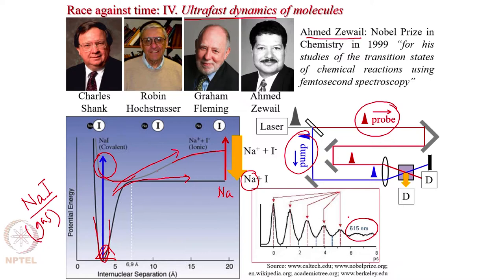Zewail and coworkers launched the pump pulse and after a controlled time delay launched the probe pulse. The time delay is controlled using an interferometric setup: you split the pump and probe beams, and in the probe arm you move a mirror with very precise steps, translating to a temporal delay on the order of a fraction of a femtosecond. This technique is known as the pump-probe technique - you pump the system and after a certain time delay you probe it, varying the delay between the two pulses.